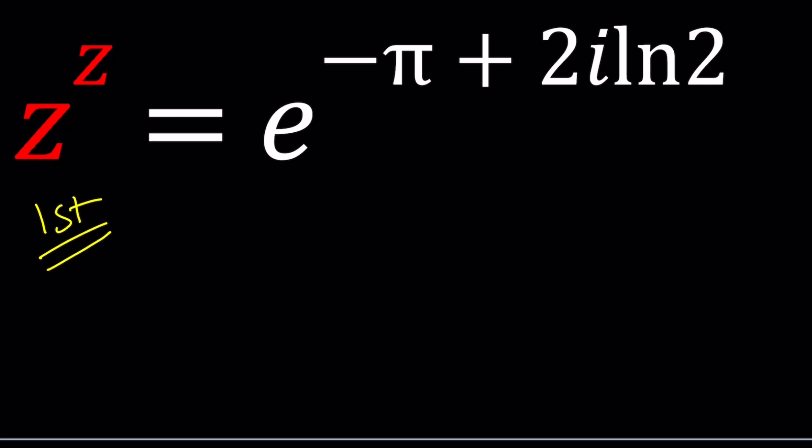For my first method, I'm going to start with Z to the Z. How do you write Z to the Z? Anytime you have something like Z to the W, it can be written as e to the power W ln Z. That's the complex exponentiation, a complex number to another complex number. What is the ln of a complex number? We'll talk about that too.